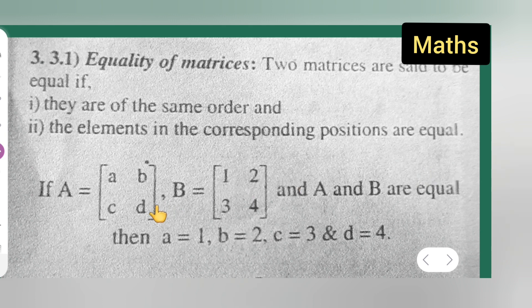The elements of the corresponding positions should also be equal. Next, I can take this as an example. If A is equal to matrix A and this is matrix B.